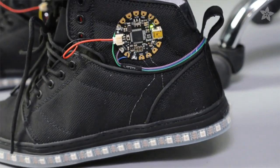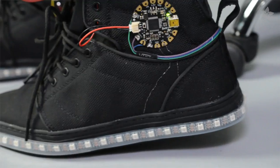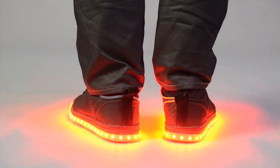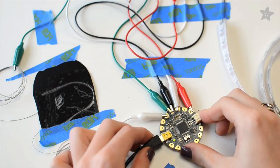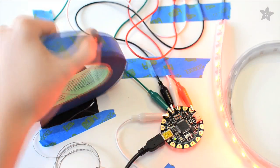Each time Flora sees the resistance of the Velostat drop, it knows you've stepped on the heel sensor and it triggers the LEDs around the sole to animate, lighting up your stride. We prototyped the circuit with alligator clips before attaching everything to the shoe.